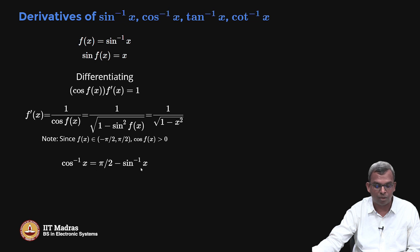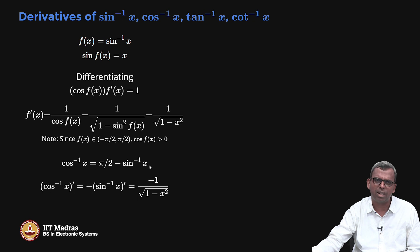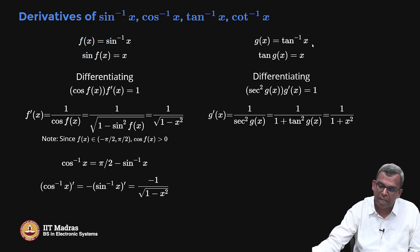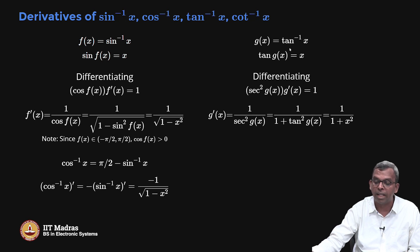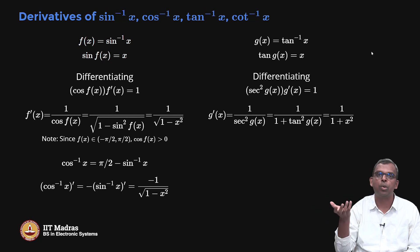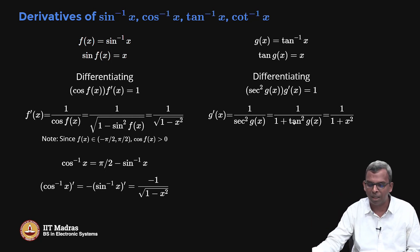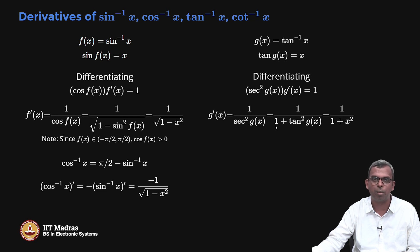Since cos inverse of x is pi by 2 minus sin inverse of x, if you take the derivative you will get minus 1 by root of 1 minus x square for cos inverse of x. These are formulae you might have seen in school. The key idea is that sin inverse of x derivative is 1 by root of 1 minus x square. You can do the same for tan and you will get 1 by 1 plus x square. Inverse trigonometric functions yield rational or square-root type expressions when differentiated — similar to how log x gives 1 by x.